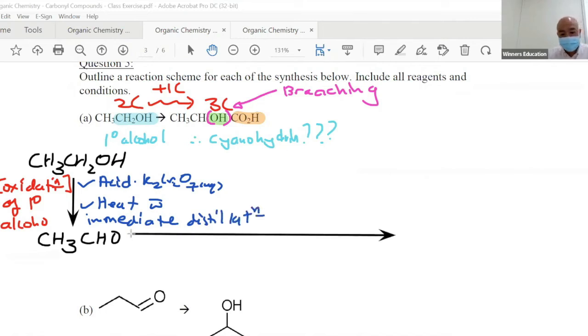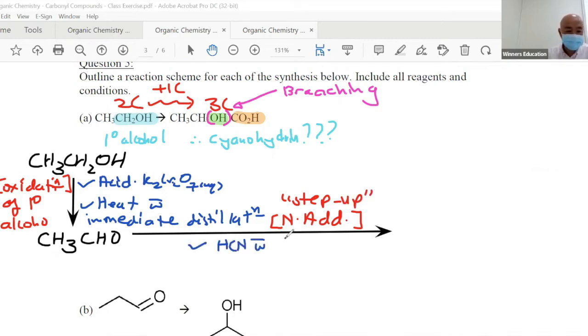Consider done. Next we will then get our cyanohydrin out. So again, this is called nucleophilic addition, also known as step-up reaction. So what do you add for step-up? Here we go: KCN, the main reagent, with trace H2SO4, 10 to 20 degrees Celsius, so that you don't get intoxicated doing the experiment.